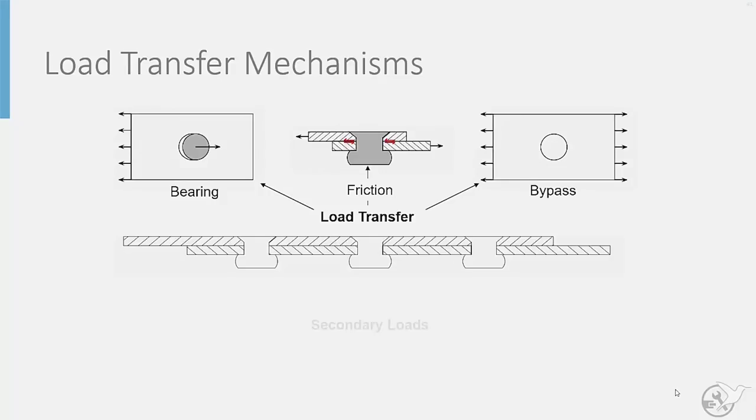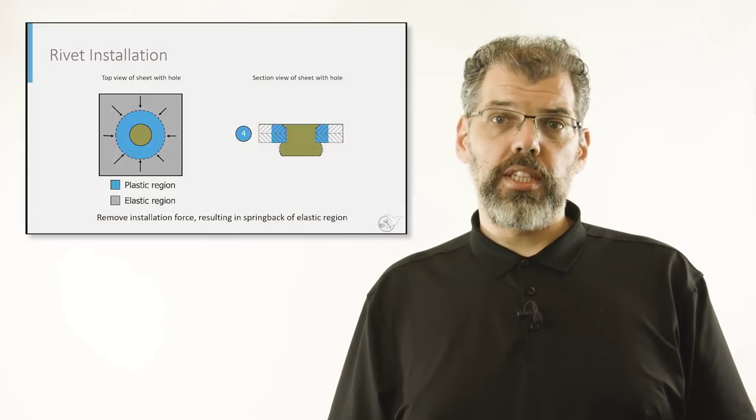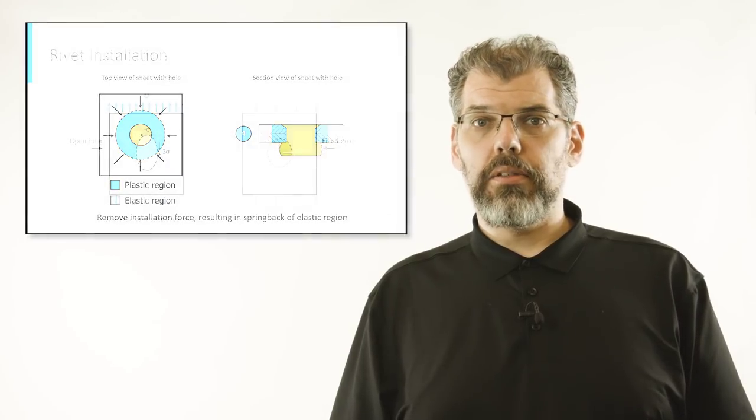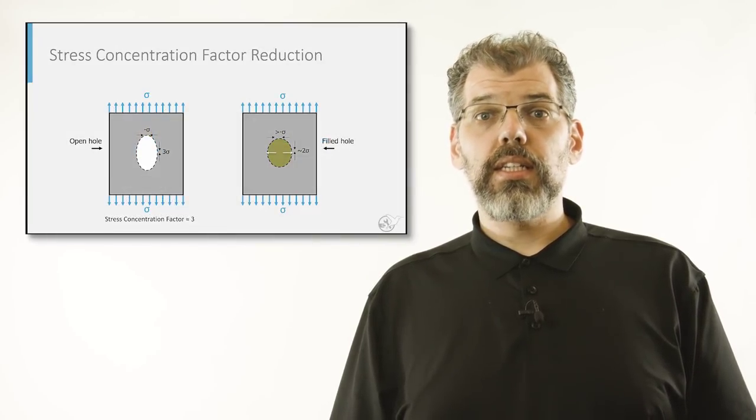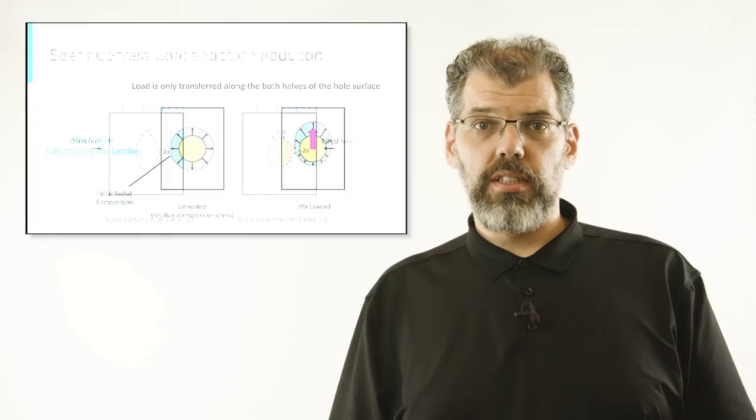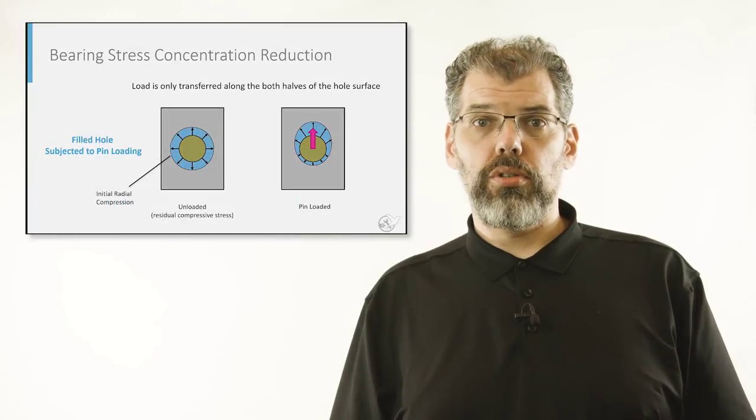In addition to load transfer, secondary loads exist within a structure known as interference and secondary bending. The role of hole filling, also known as interference, was discussed in detail in a previous video. This can produce favorable residual stresses and influence the stress concentration due to load transfer.